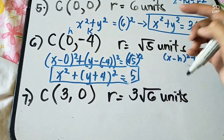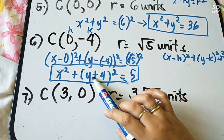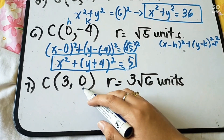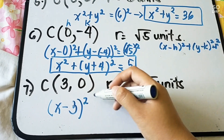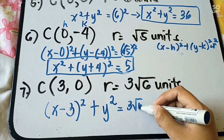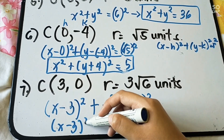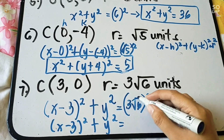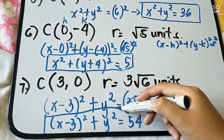Notice: when x equals 0, x minus 0 just becomes x, giving x squared. Similarly, when y equals 0, you just get y squared. For example, center (3, 0) and r equals 3 square root of 6: substitute to get (x minus 3) squared plus y squared equals (3 square root of 6) squared. Simplifying: 3 squared is 9, (square root of 6) squared is 6, so 9 times 6 equals 54. This is your standard form.